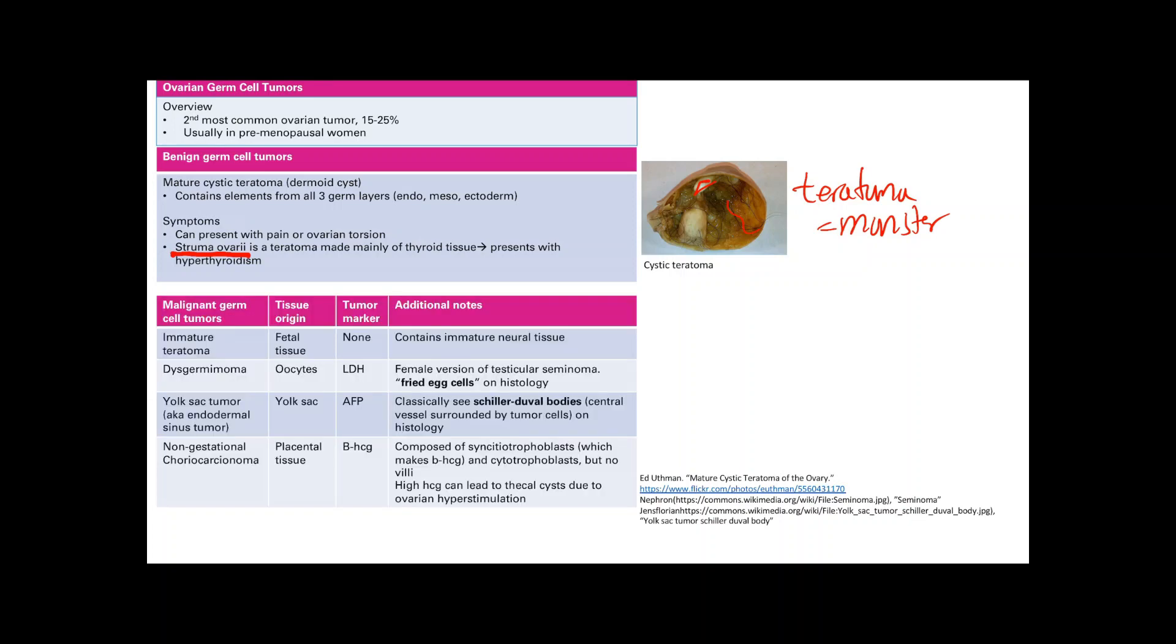Malignant tumors: there's a bunch of different types. The first one is immature teratoma. In contrast to the mature cystic teratoma, this is again a fetal tissue origin. There's no tumor markers and usually it's associated with neural tissue.